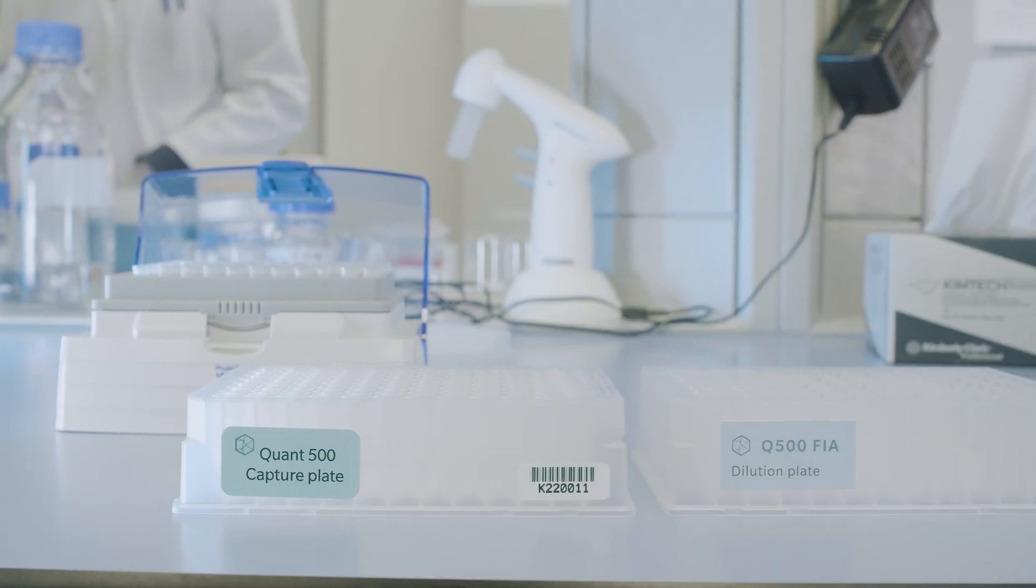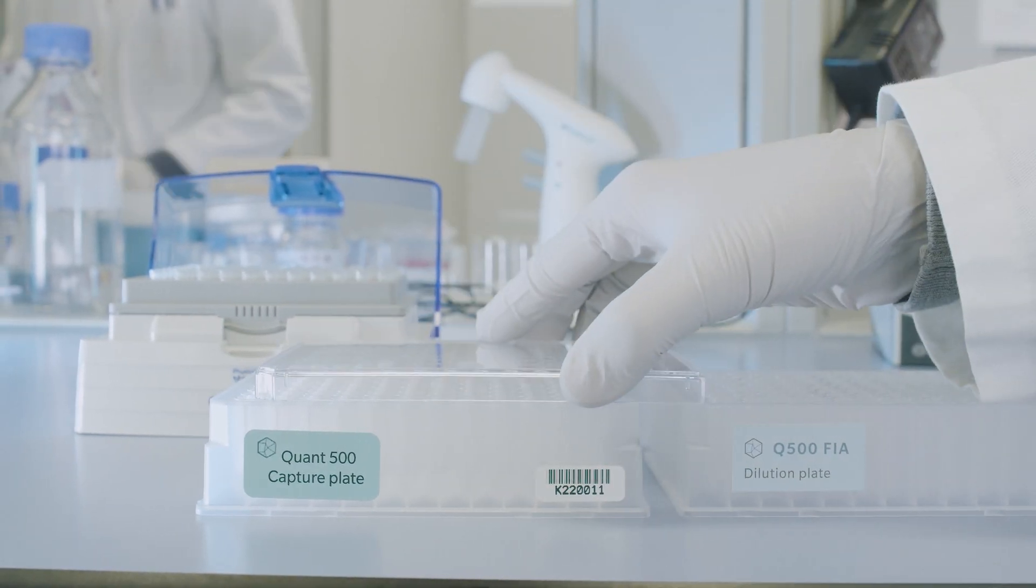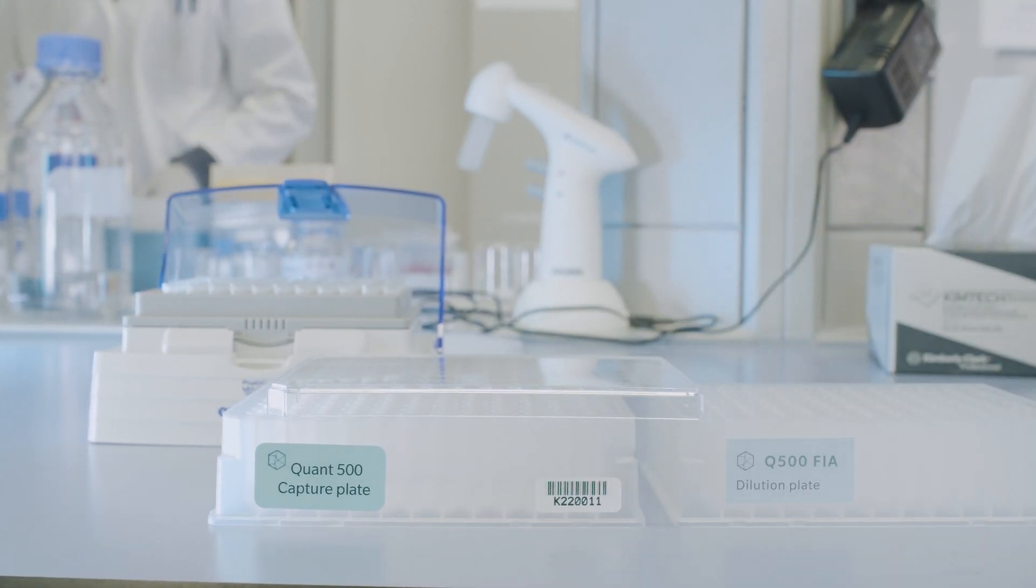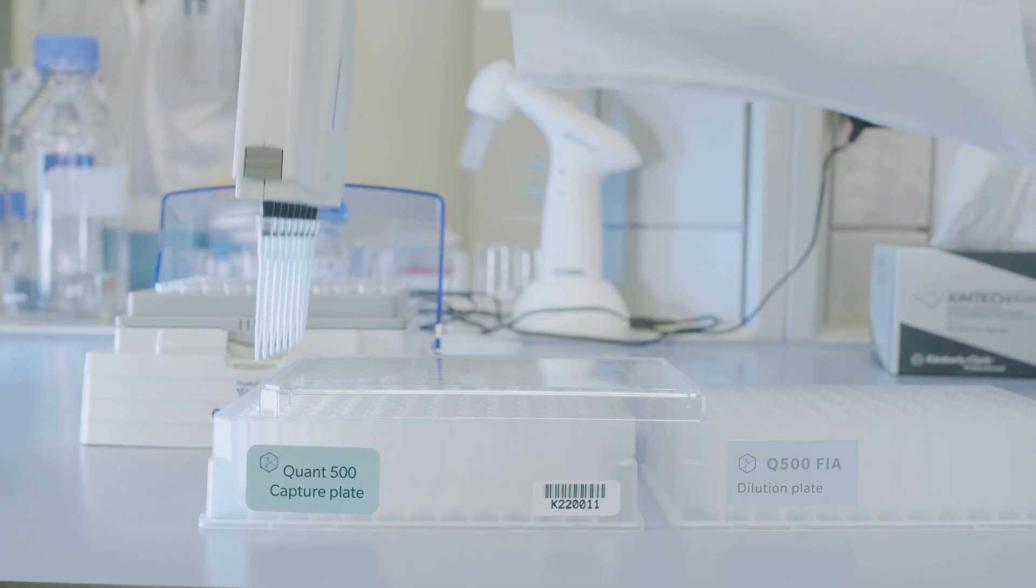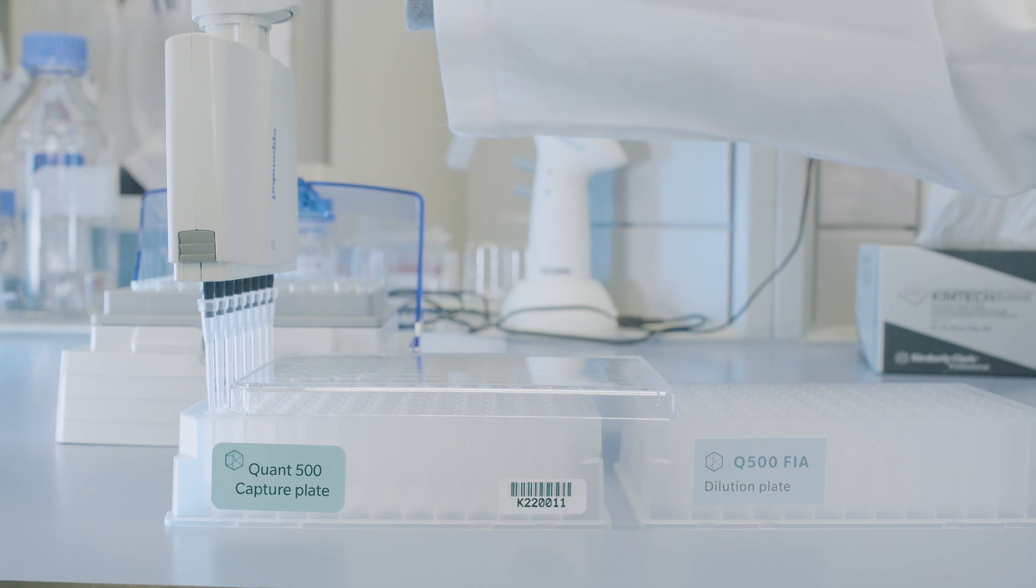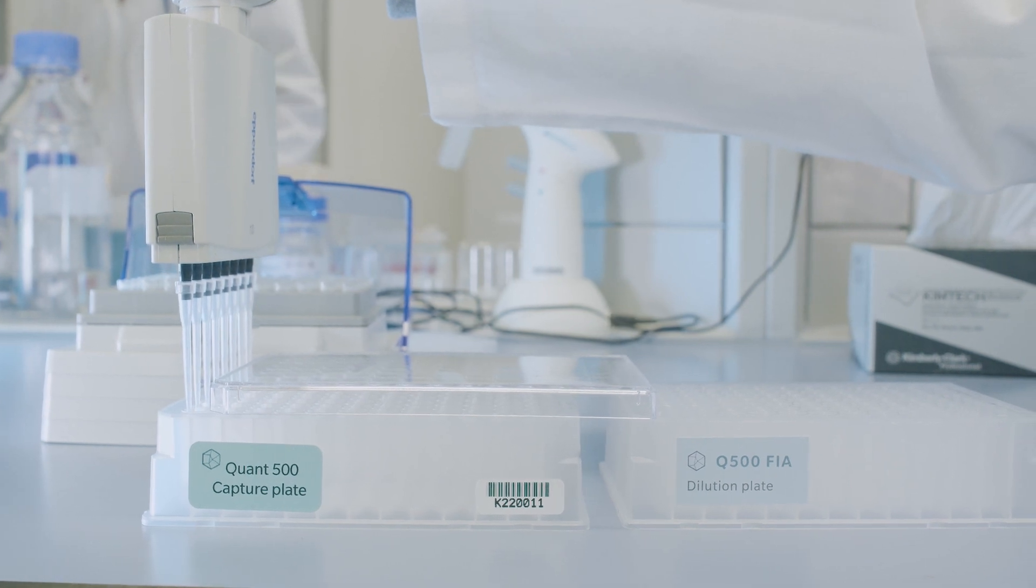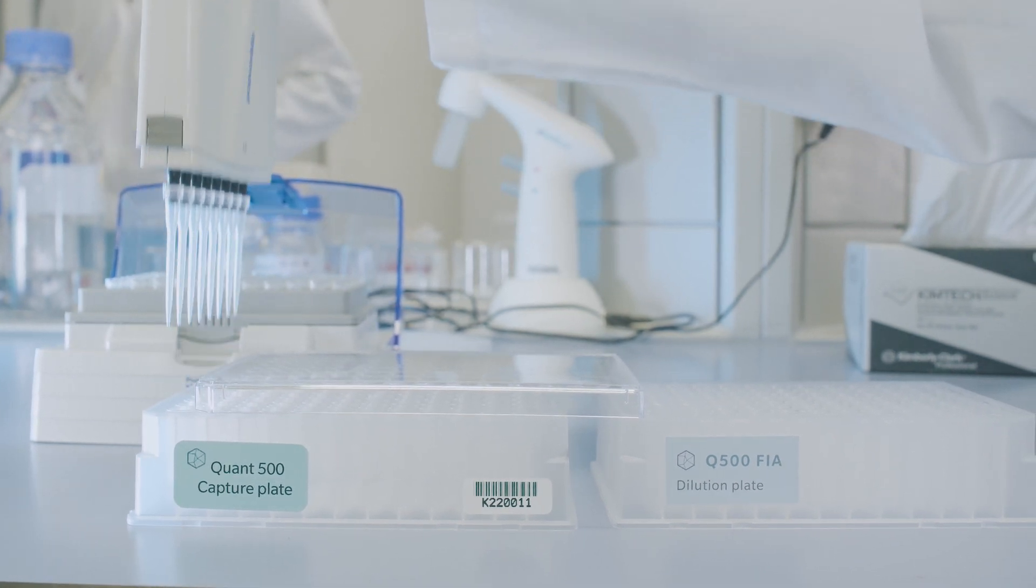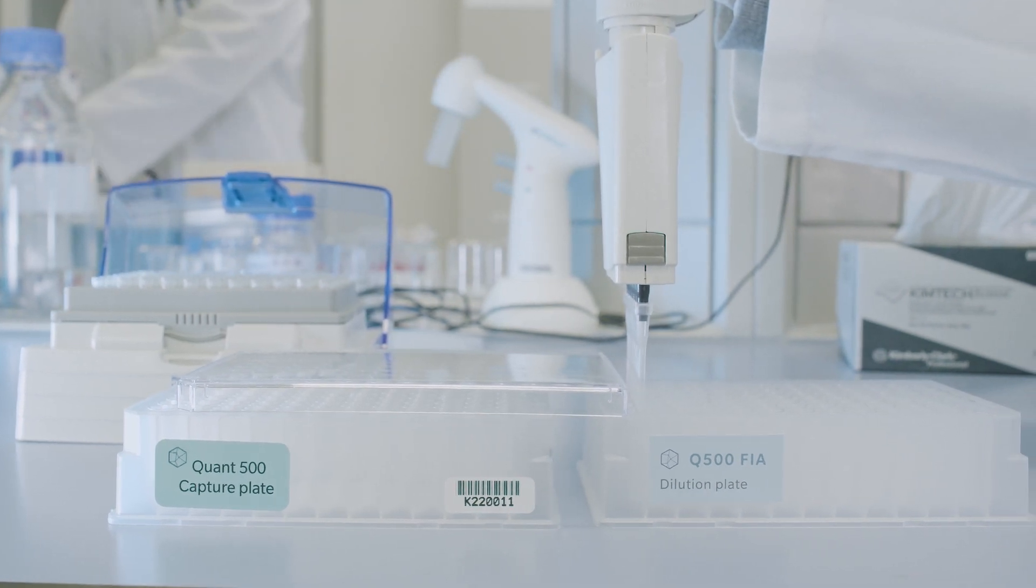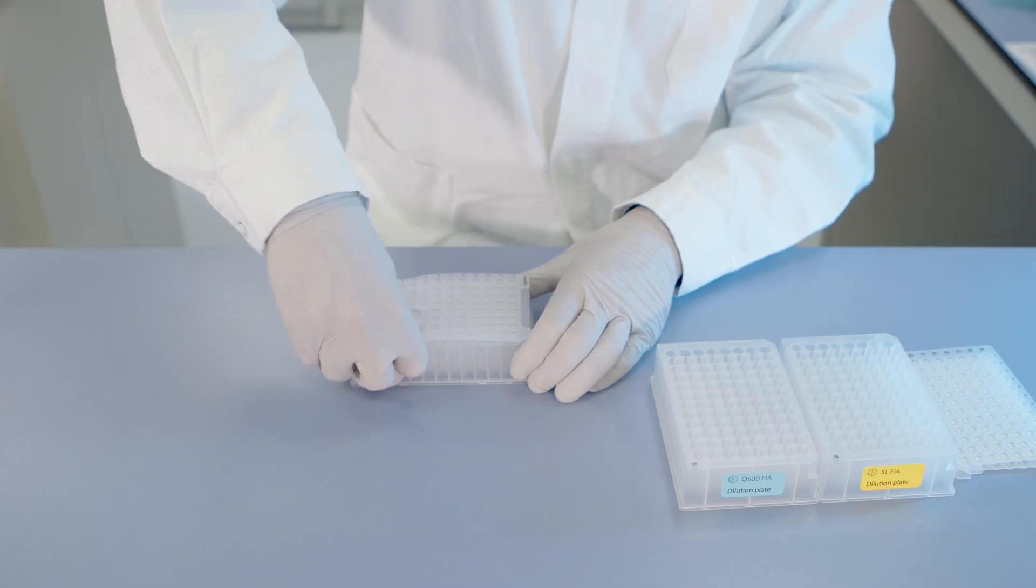For the FIA part, open the empty 96 well capture plate labeled Q500 FIA Dilution plate and place it next to the Q500 capture plate. Add 490 microliters of FIA solvent into each well. Then transfer 10 microliters from each well of the Q500 capture plate into the 96 well plate. Seal the plate with the provided silicone mat and shake the plate for 10 minutes at 600 RPM.